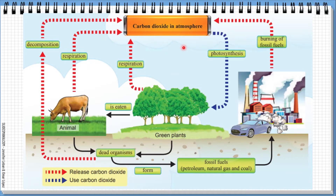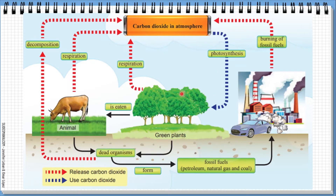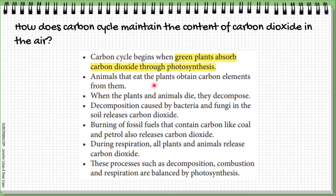So the carbon dioxide in the atmosphere is absorbed by plants for the process of photosynthesis. From this picture, we can say that decomposition, respiration, and burning of fossil fuels all release carbon dioxide into the atmosphere, and this is balanced by the photosynthesis process, which absorbs carbon dioxide from the atmosphere.